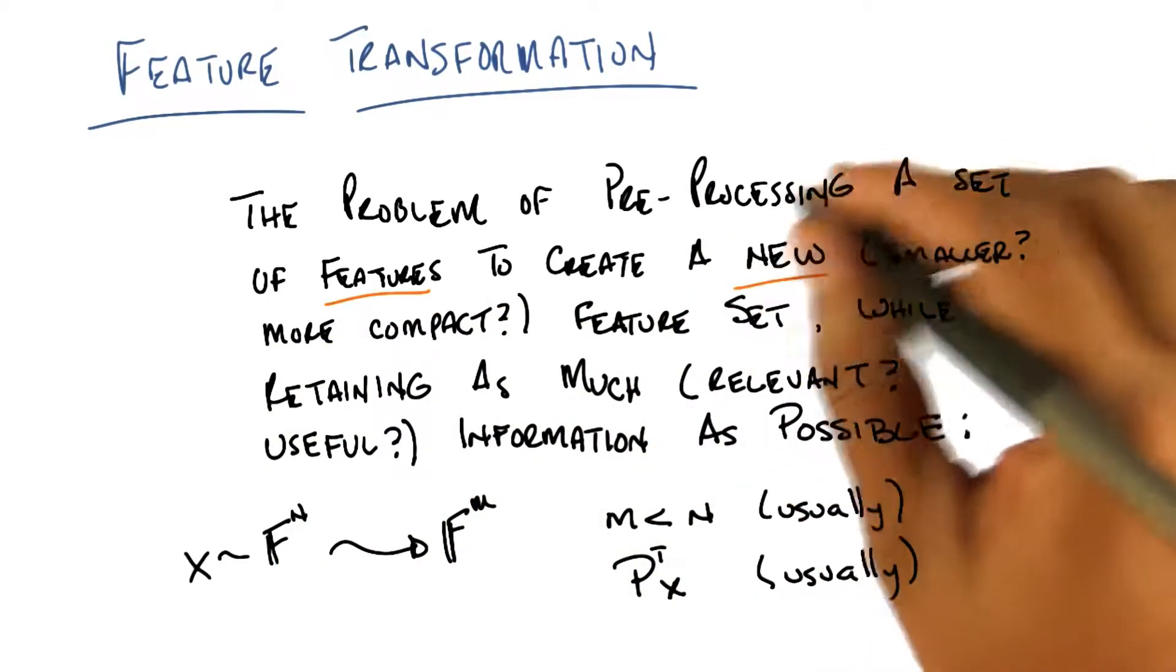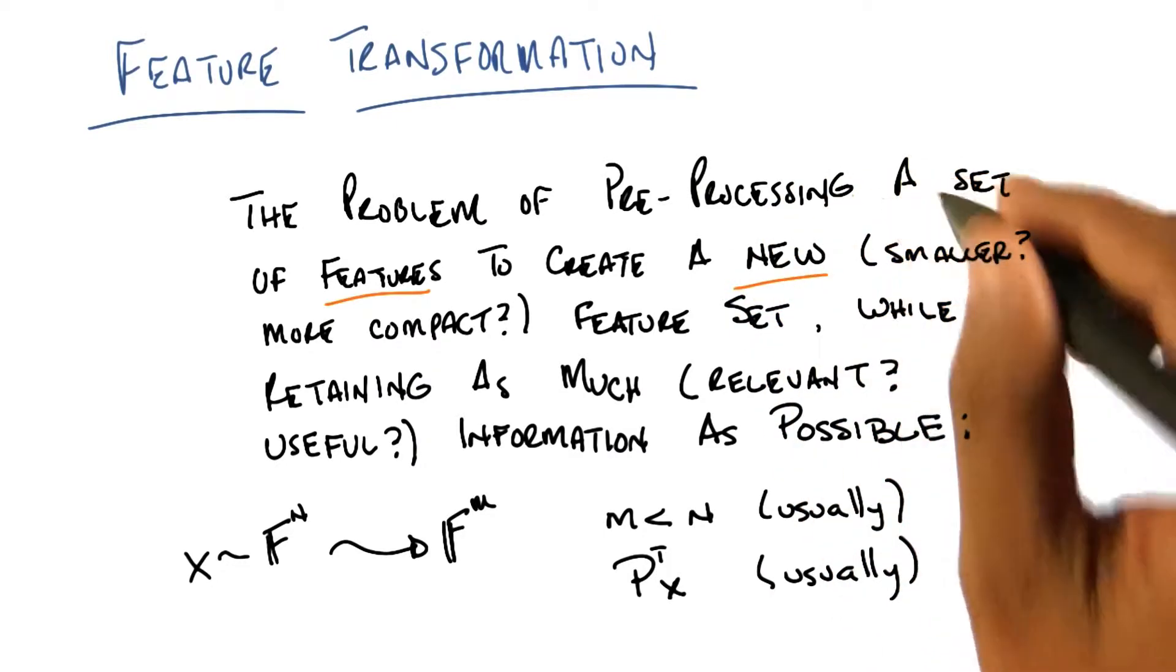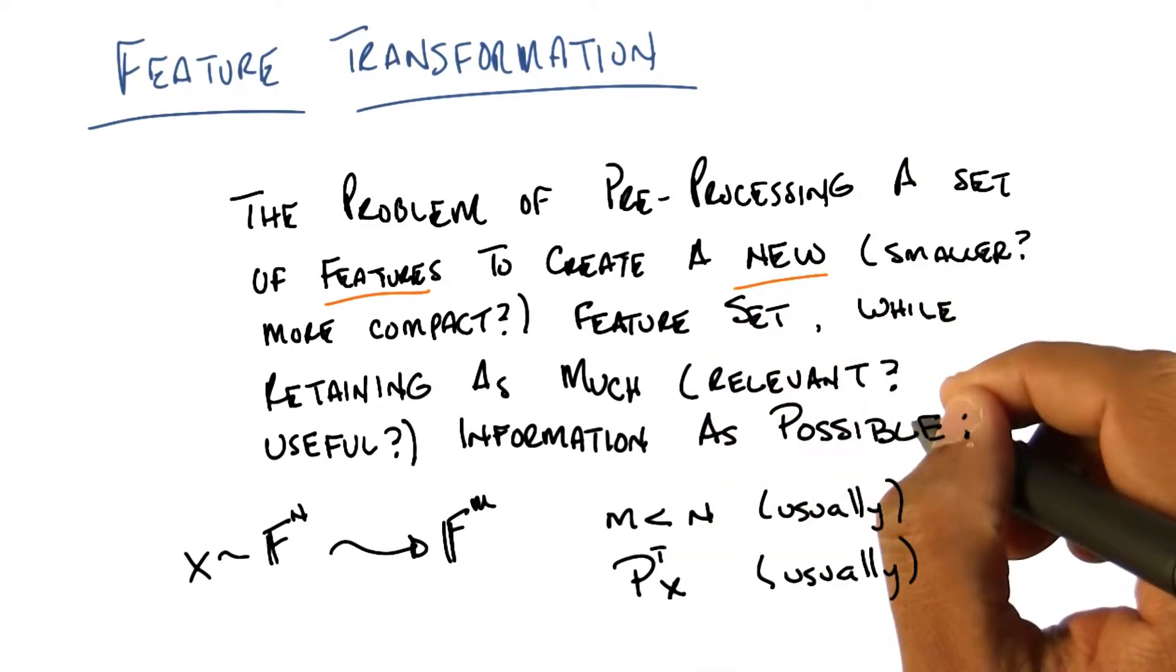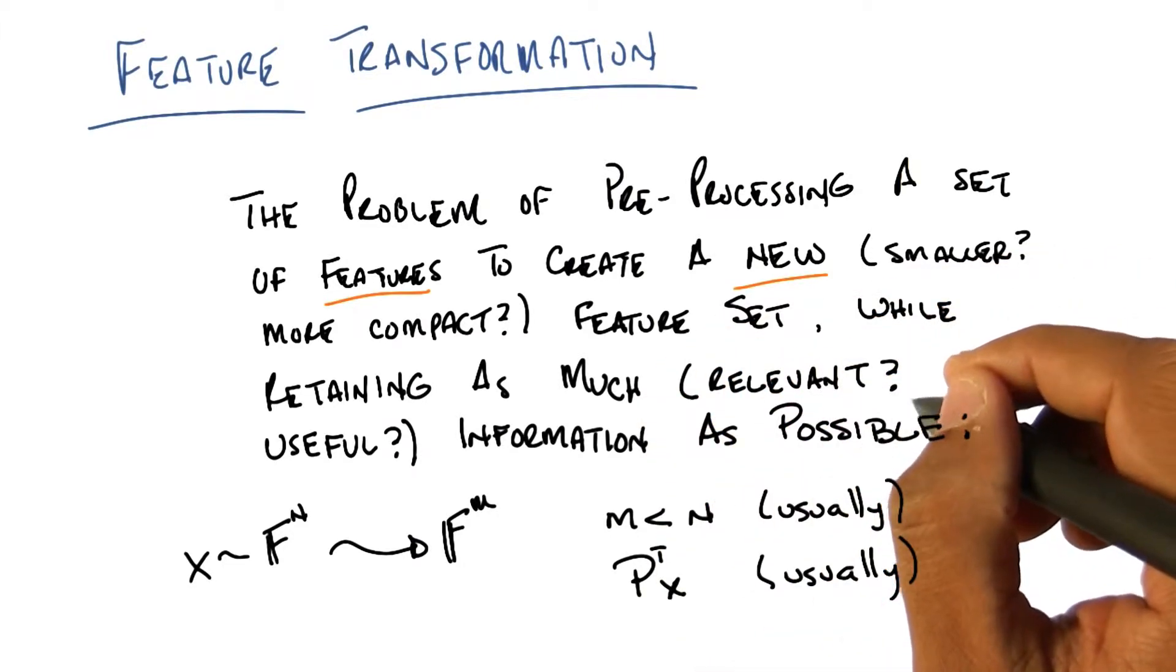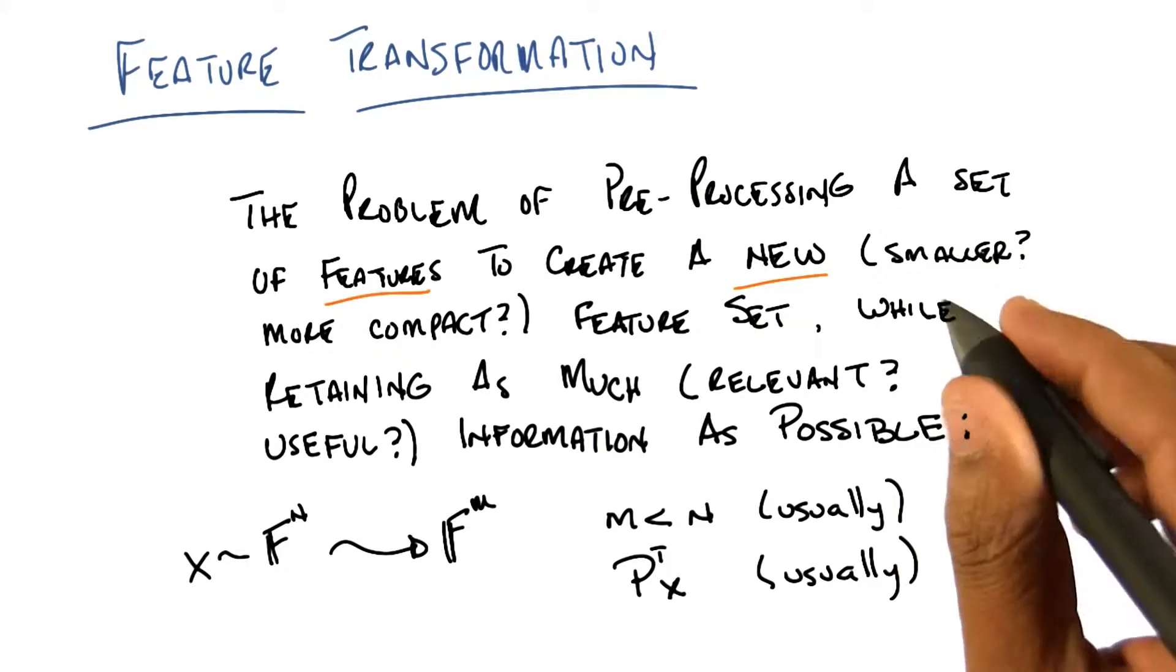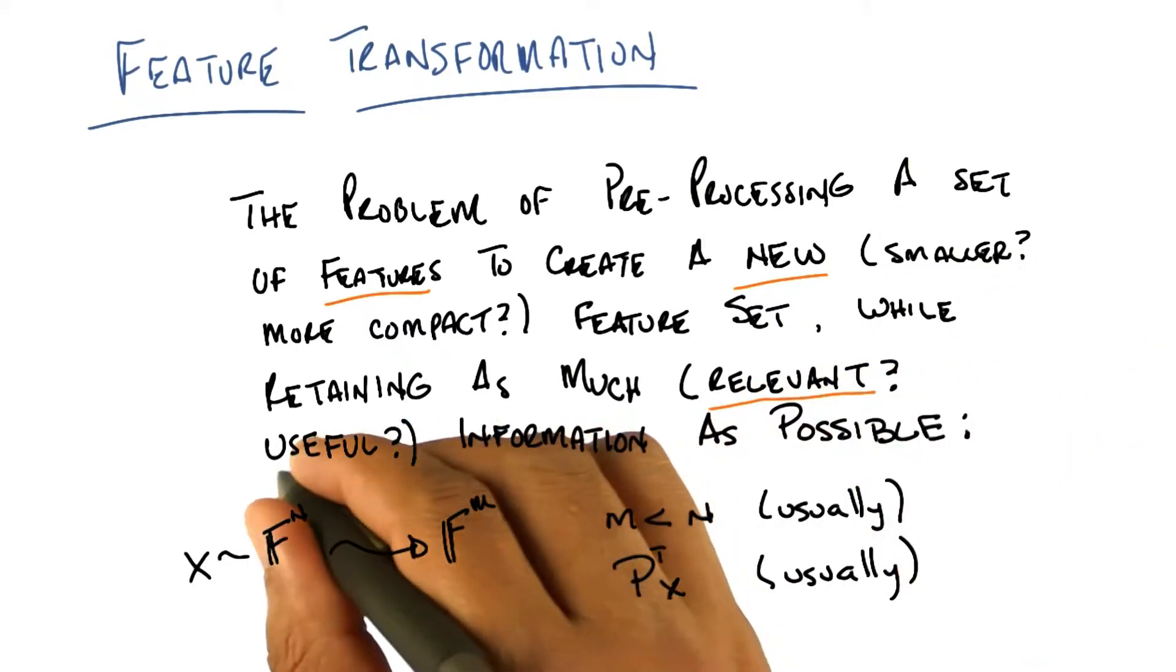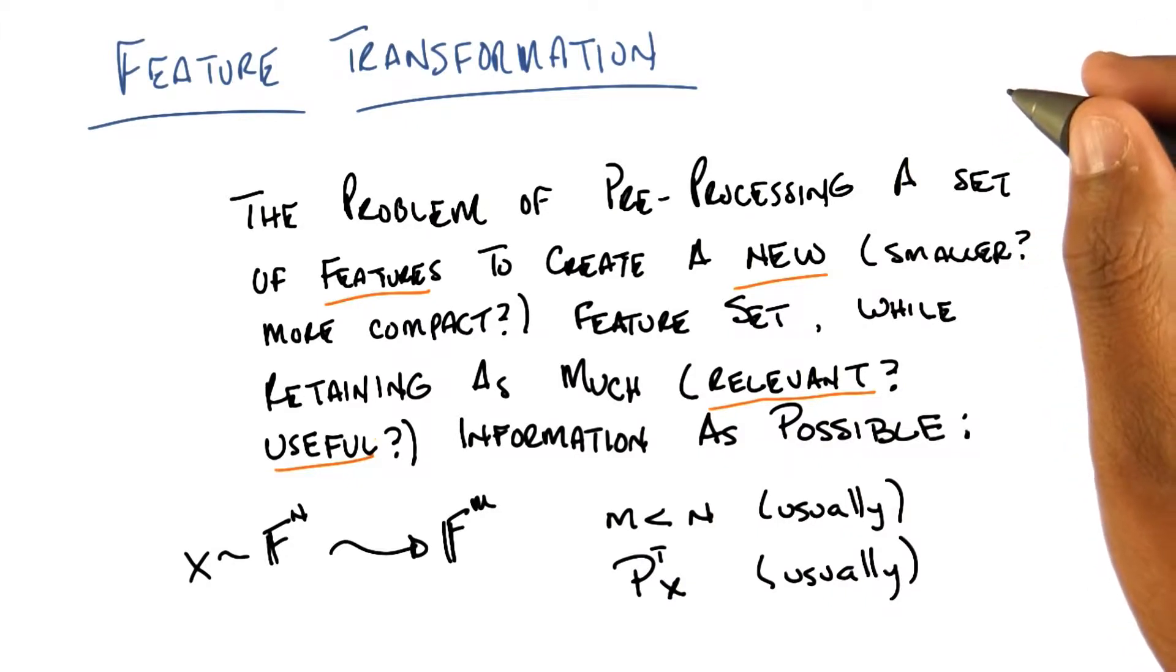But while we create this new set of features, we want to explicitly retain as much information as possible. And when I say retain as much information as possible, I probably mean, I think we'll see as we continue this conversation, information that is relevant and hopefully useful. Now, the first thing you might ask is, what's the difference between this and feature selection?